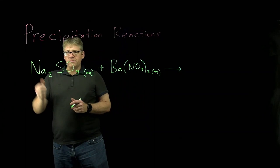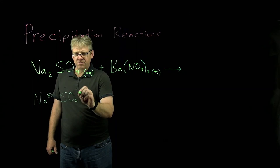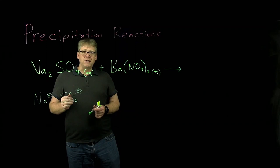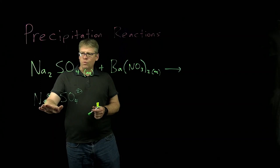Looking at sodium sulfate, our cation is Na 1+, and our anion is the familiar sulfate, SO4 2-. Notice I haven't made any attempt to balance this. We did need two sodiums to balance out the two negative charges on the sulfate — that's why sodium sulfate has the formula Na2SO4. But for right now I just want to see what type of cation and anion is present.